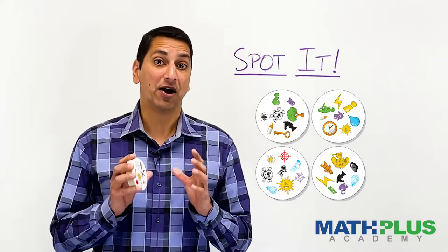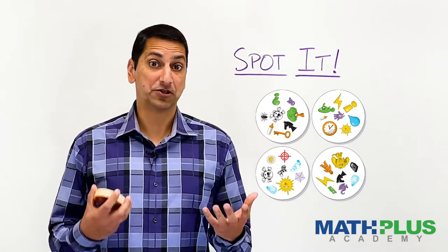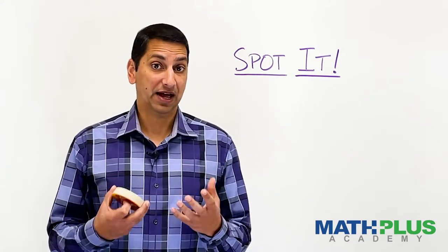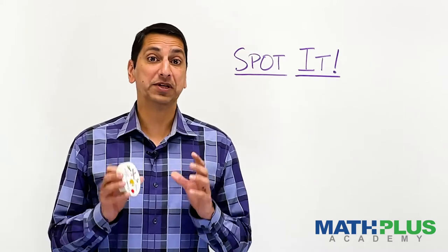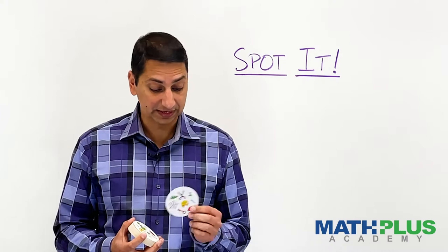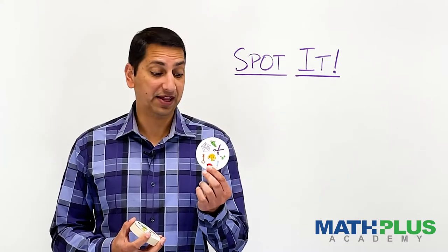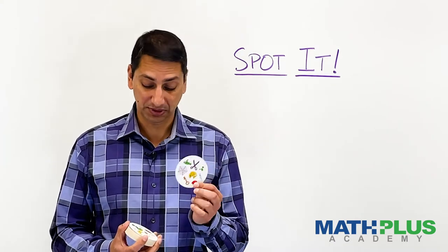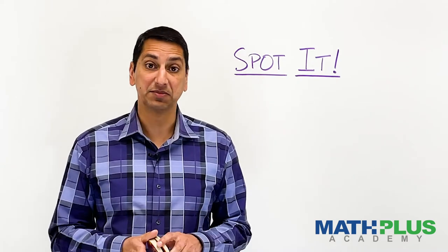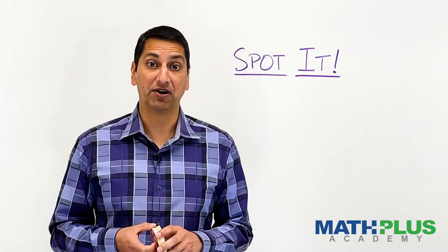So our exploration today is going to be to try and make our own Spot It decks. And we'll start, as we often do, with a really simple question. So in this case, if you look at this deck, you'll notice that there are eight symbols on every card. So if we flip through the deck and we counted the symbols, there's eight on every card.